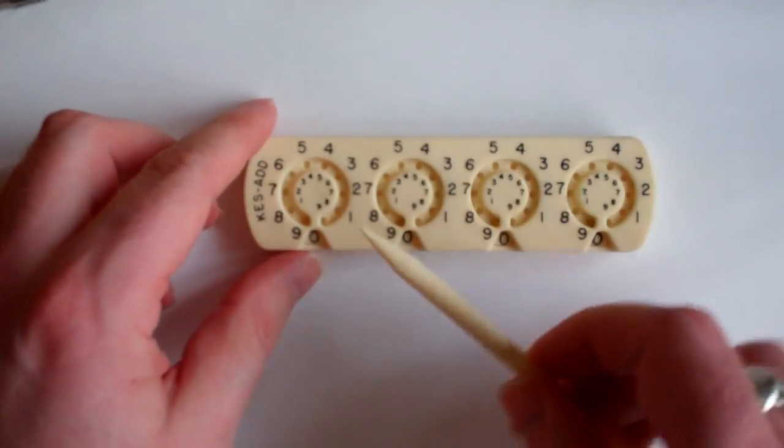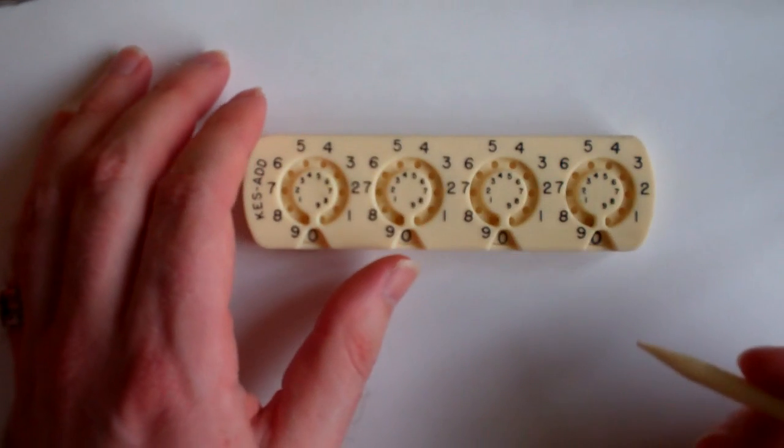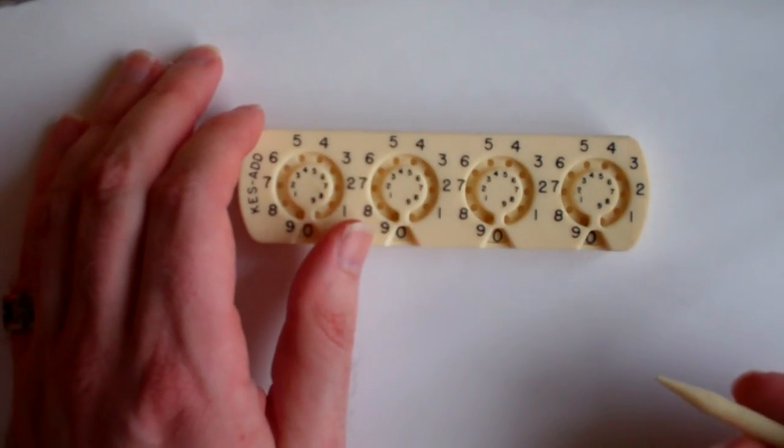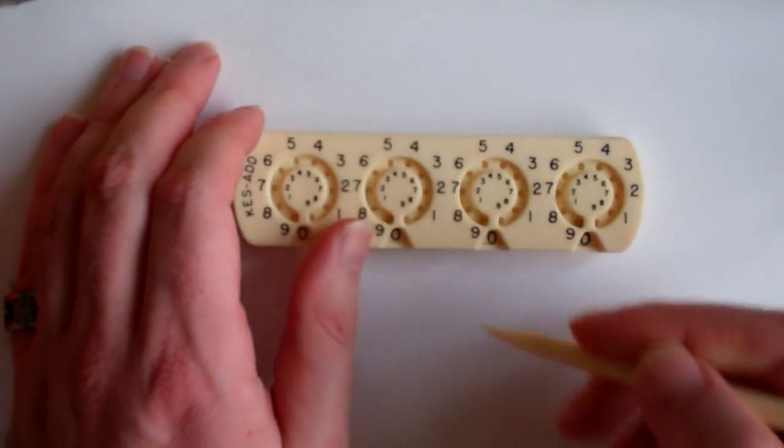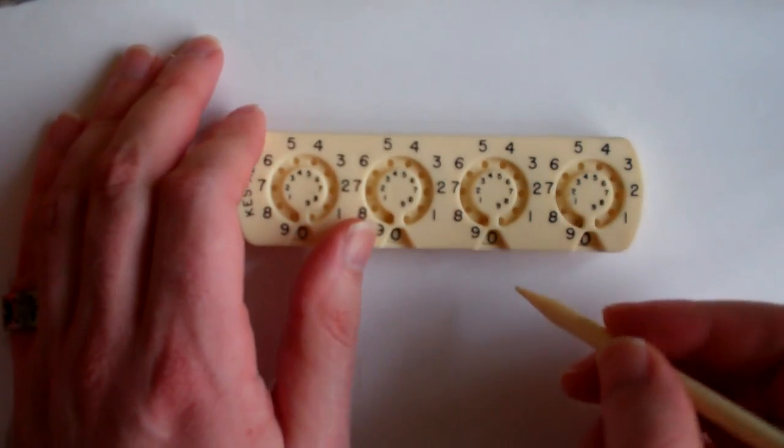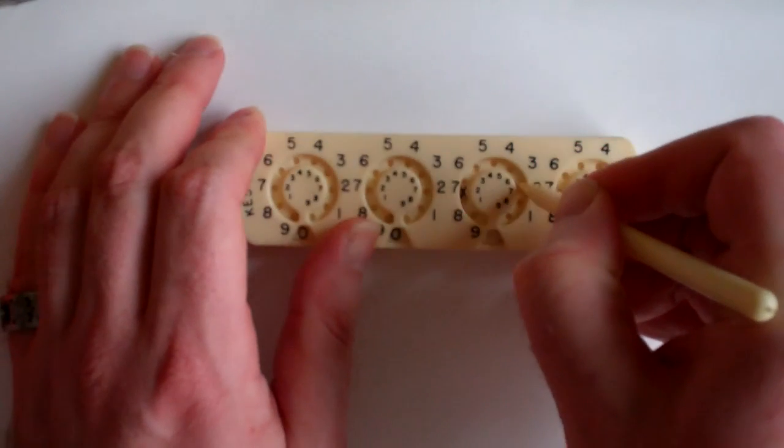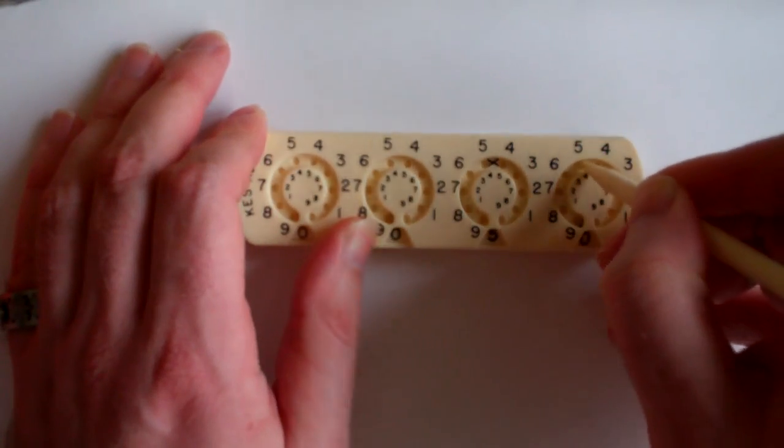It has four wheels, and you can very simply add a number by dialing it in using this stylus. So 55, put it next to the 5, dial it to the right clockwise.